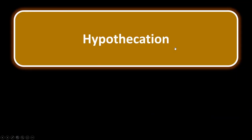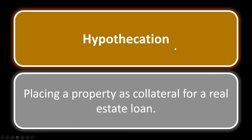Hypothecation is just a fancy term for placing a property as collateral for a real estate loan. When you use a deed of trust, there's a promissory note — the IOU specifying what the borrower will pay back — but it means nothing if the lender doesn't have collateral. So the lender places the property being purchased as collateral for the loan. That is called hypothecation.